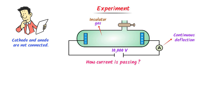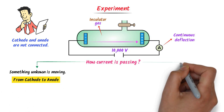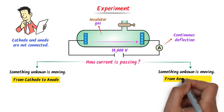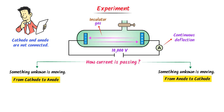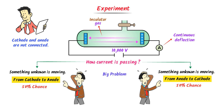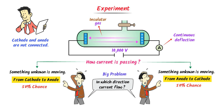We assume two possible solutions to this mystery. Firstly, we assume that something unknown is moving from the cathode towards the anode — or possibly from the anode towards the cathode. There is a 50/50 probability about this unknown flow. We face the big problem that we are not sure in which direction this unknown thing is flowing.